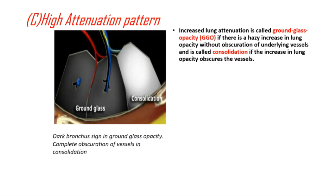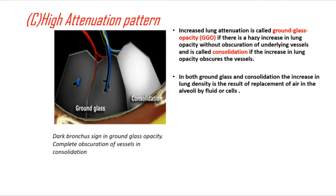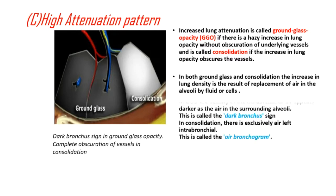Consolidation is the term used when the increase in lung opacity obscures the vessels. In both ground glass opacity and consolidation, the increase in lung density results from replacement of air in the alveoli by fluid or cells. In GGO, intrabronchial air appears darker than surrounding alveolar air — this is called the dark bronchus sign. In consolidation, air is exclusively left intrabronchial, called the air bronchogram.